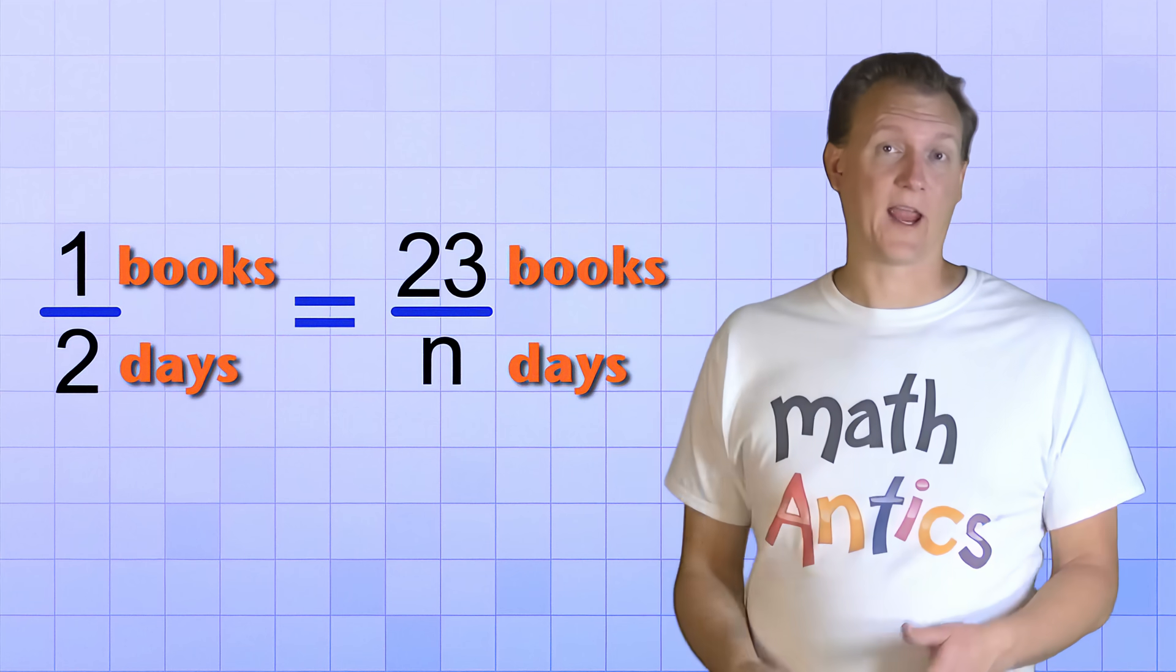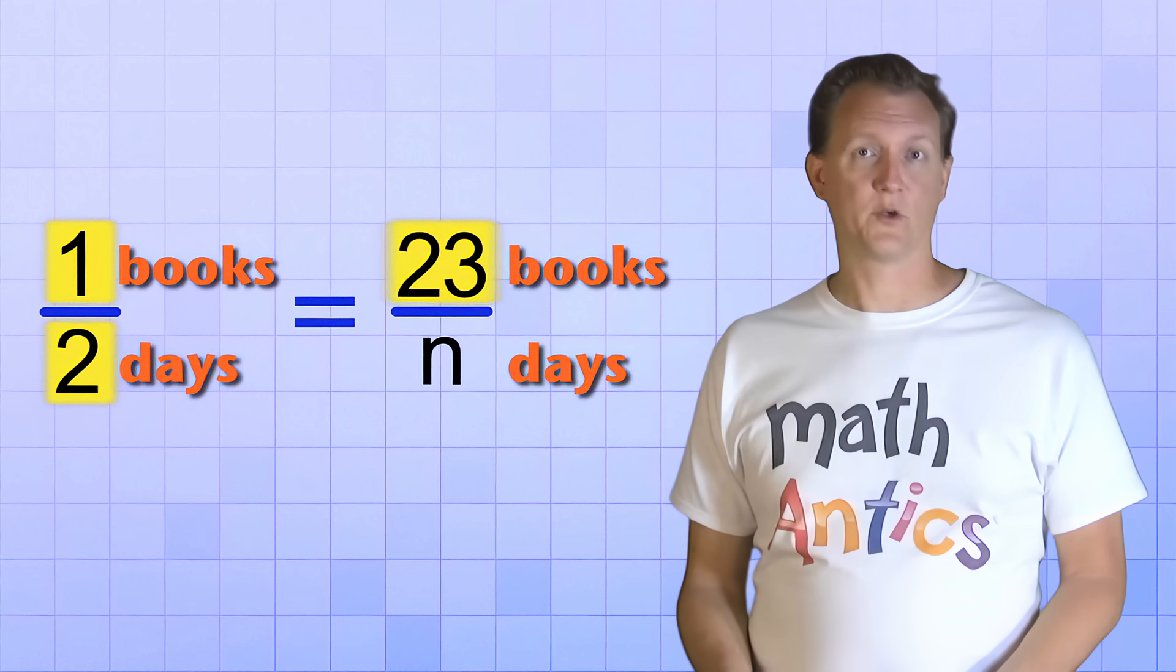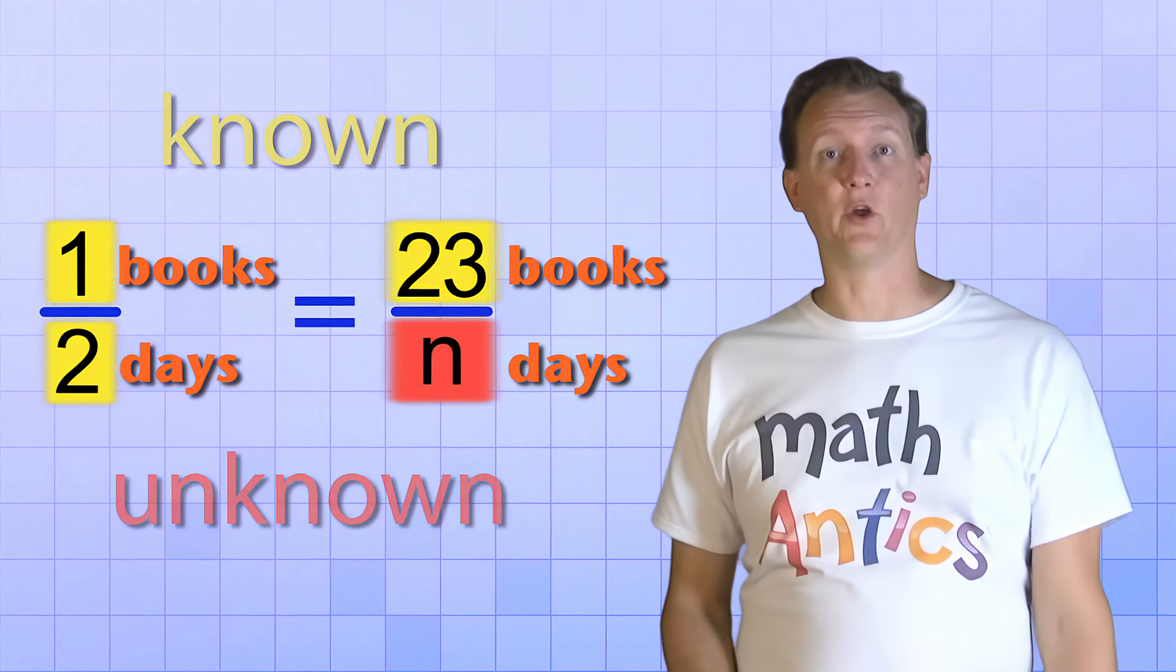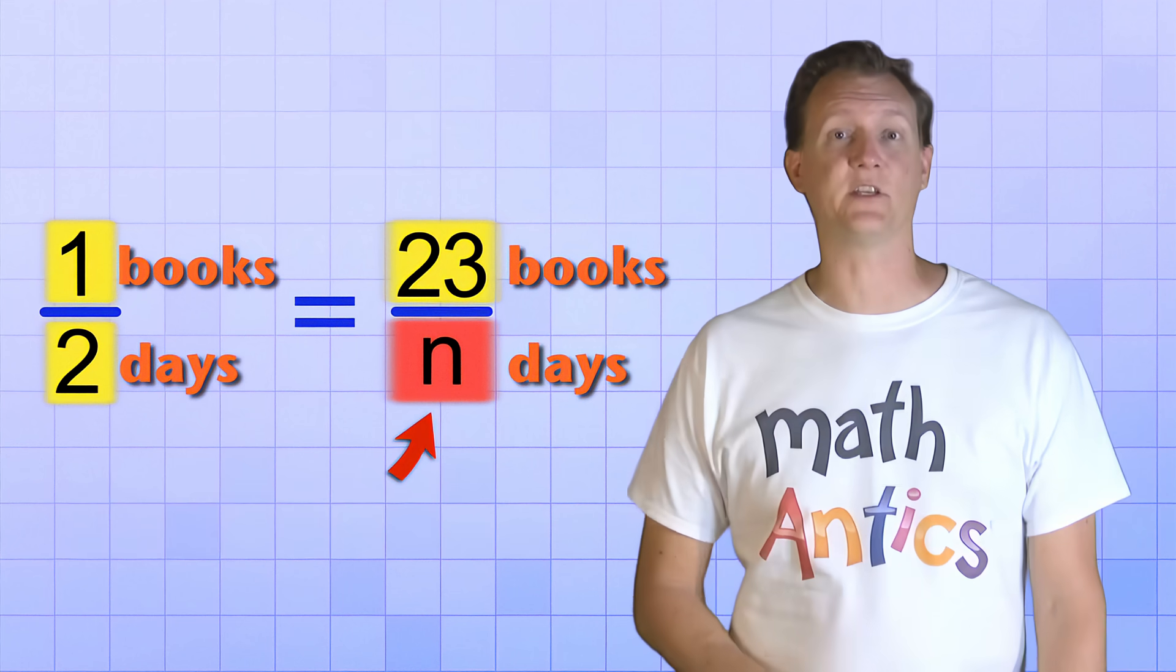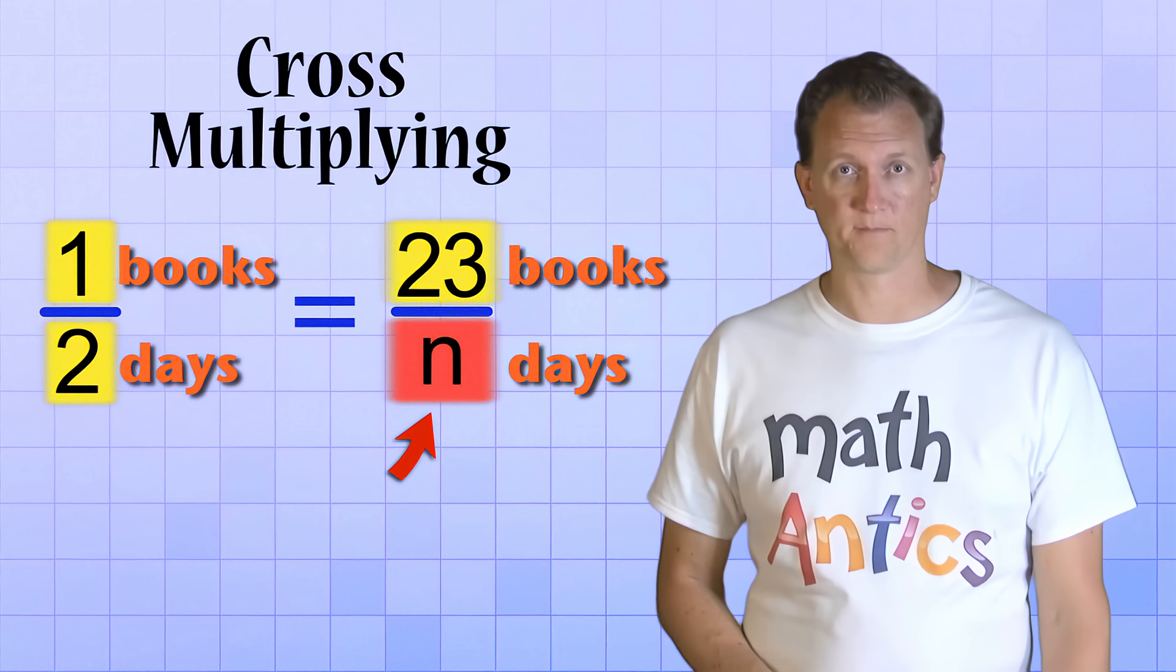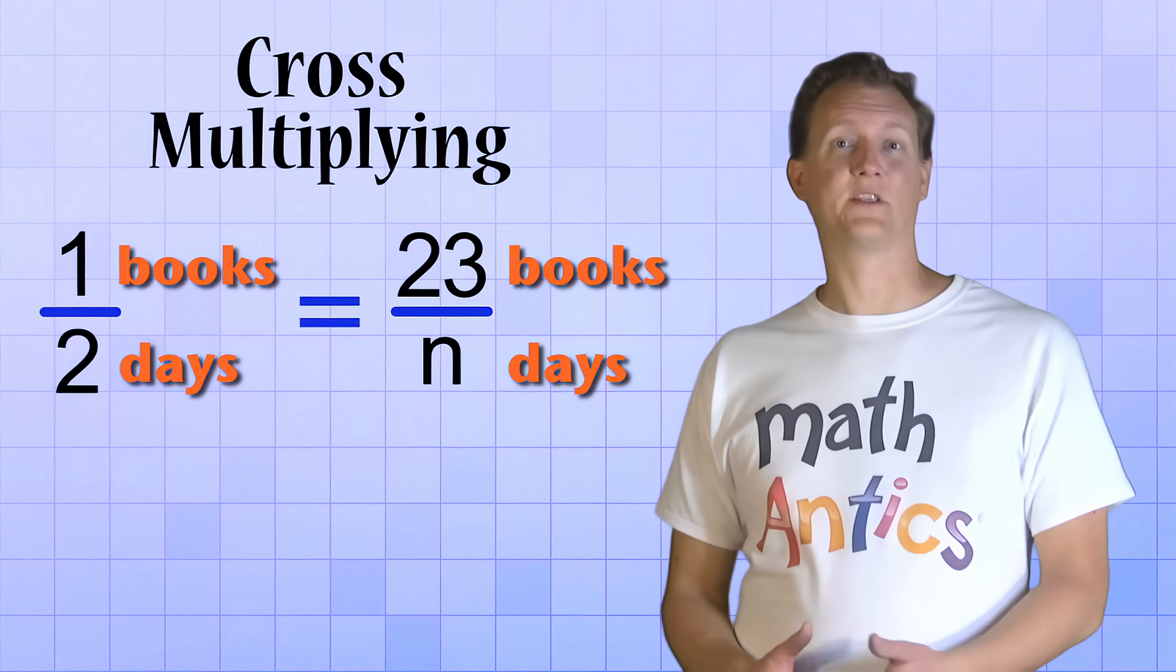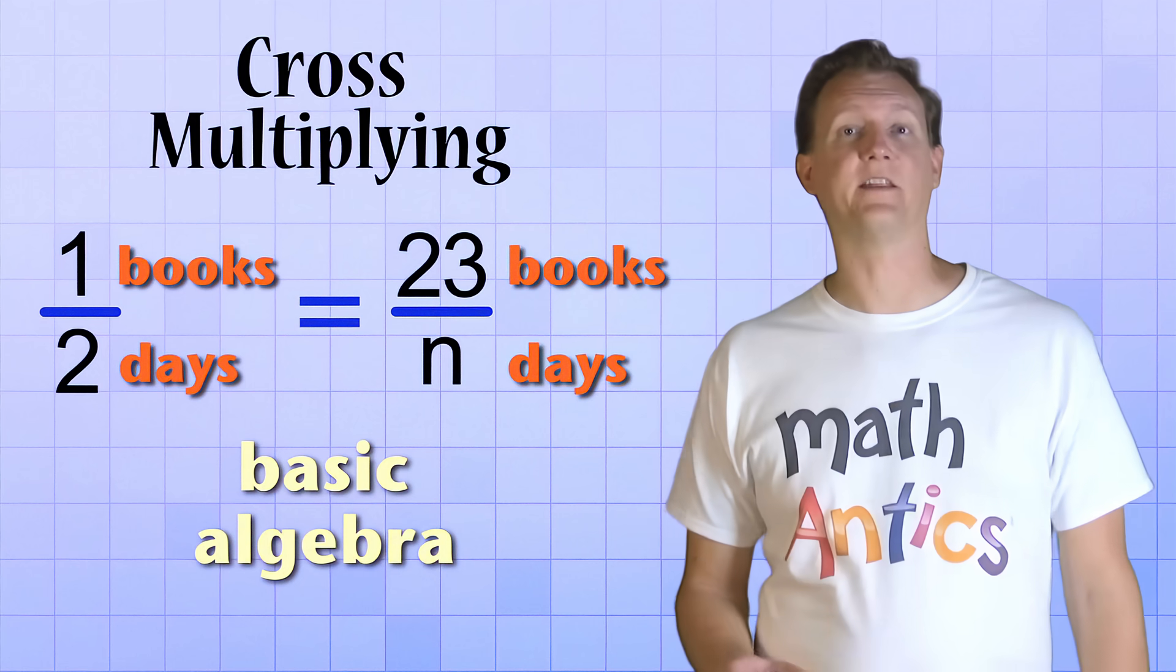This is how you'll usually see and use proportions in math. Three of the proportions numbers will be known and one will be unknown. Fortunately, if you know three of the numbers, you can find the missing number easily using a procedure called cross-multiplying. Cross-multiplying is just a shortcut way of doing some basic algebra to rearrange our proportion so we can find the unknown number.